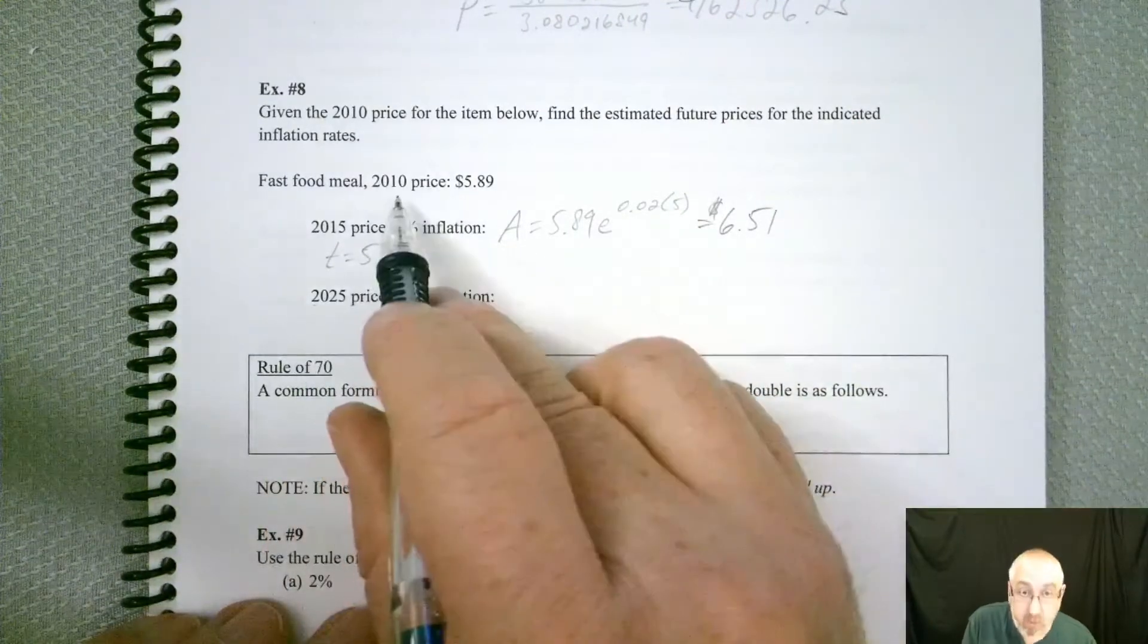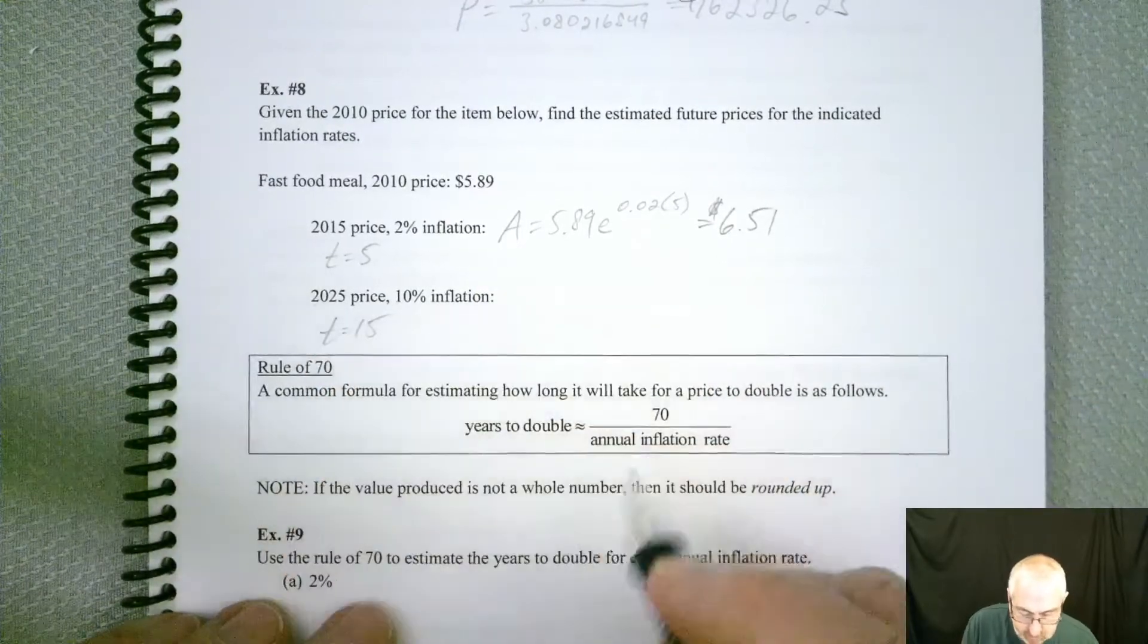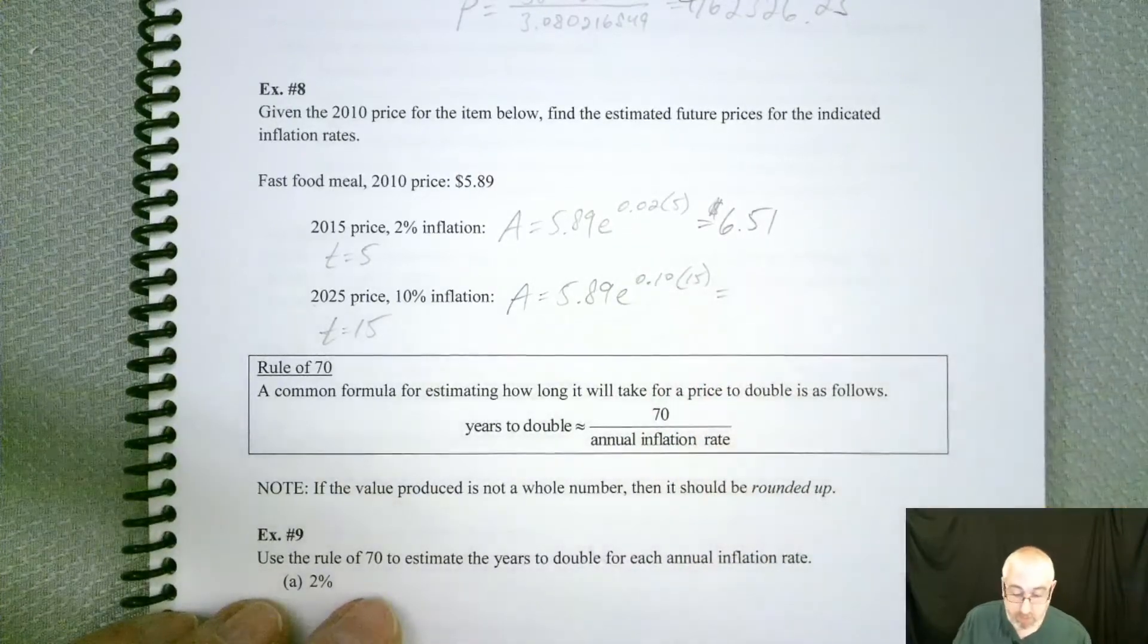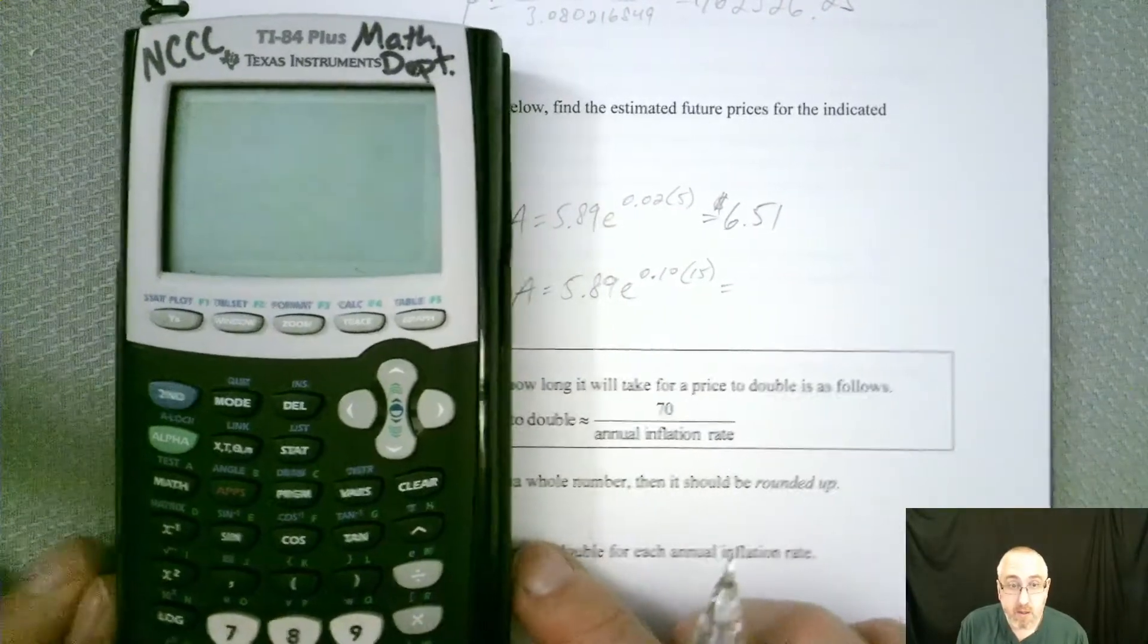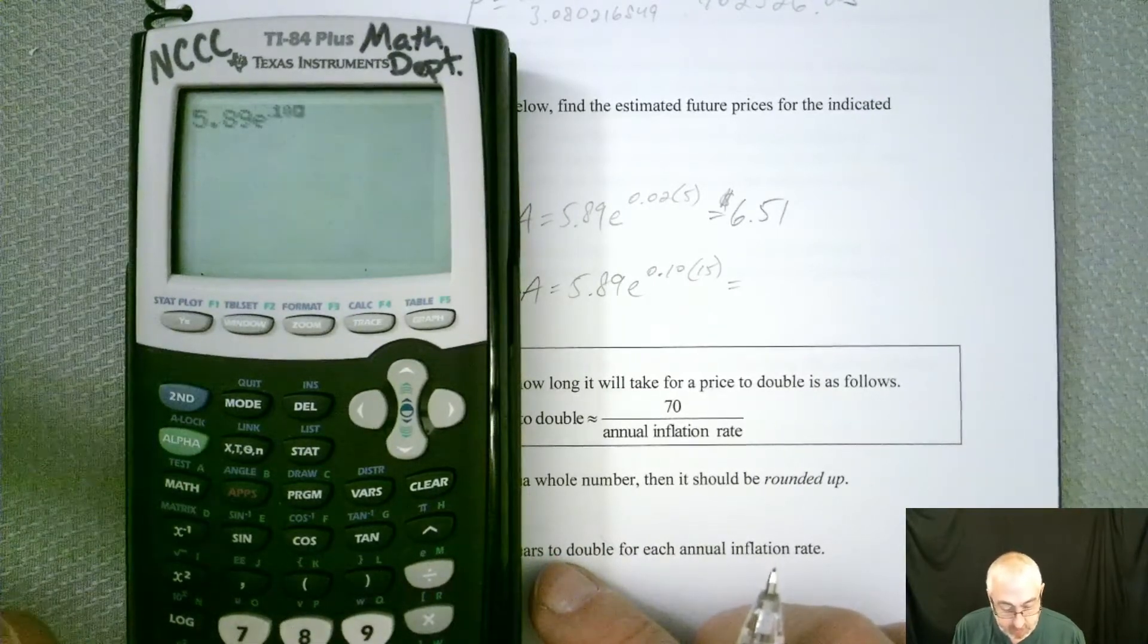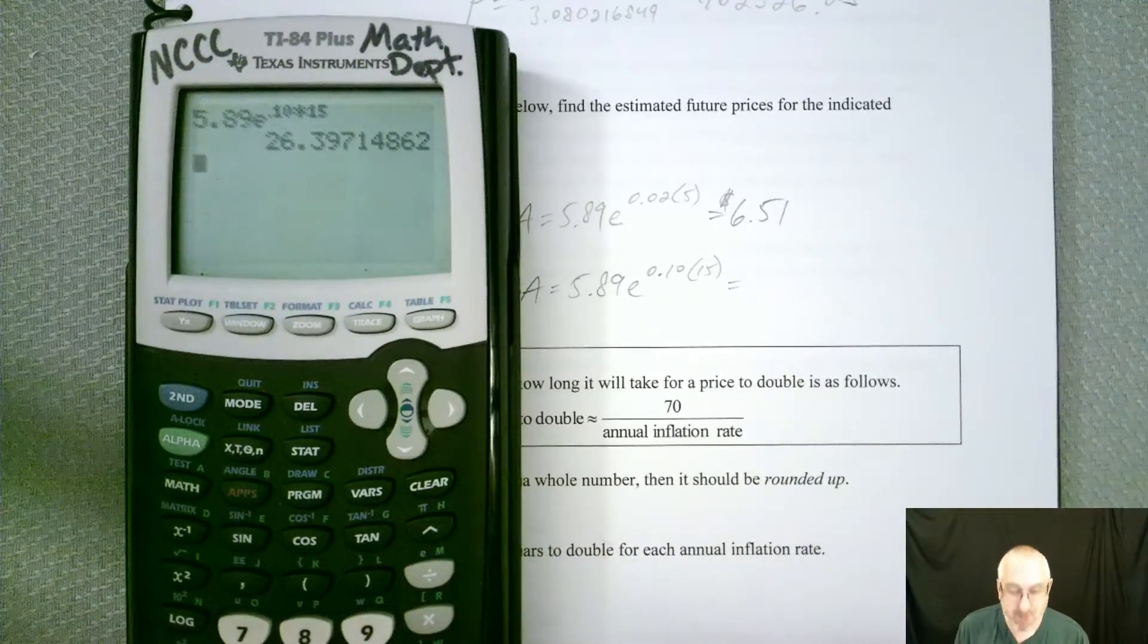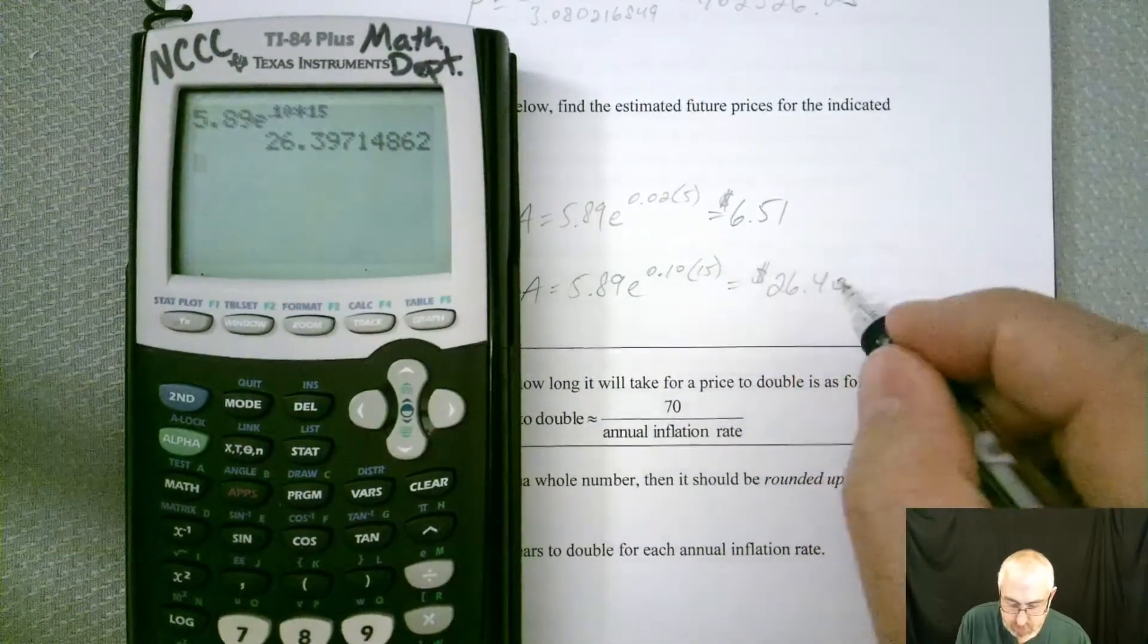All right. So now for this one, again, we're starting with 2010, but now we're going to 2025. So now the T has gone up 15 years. And our inflation rate is a little different. So in 15 years, $5.89 would have gone up to what? 0.10 times 15. Wow. So that Happy Meal just went up to $26.40.